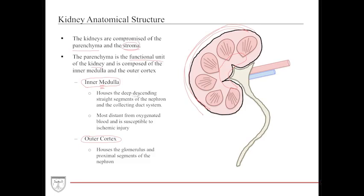The inner medulla contains the deep descending straight segments of the nephron, the loop of Henle, and the collecting duct system where it enters into the minor and major calyces before the ureter. The outer cortex houses the glomerulus and proximal segments of the nephron including the PCT and DCT. Importantly, the medulla often receives oxygen-poor blood and can be susceptible to ischemic injury, as it is furthest from the oxygenated system.